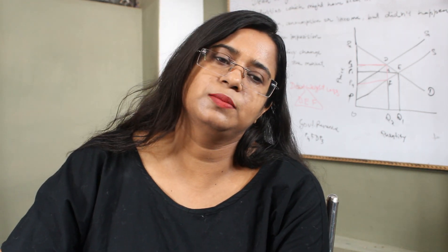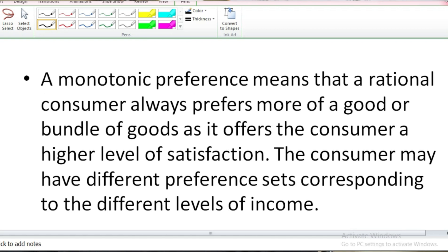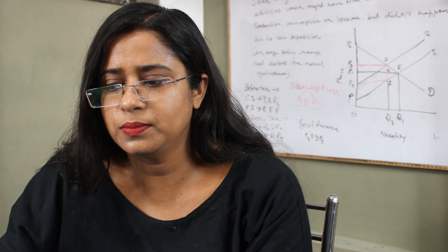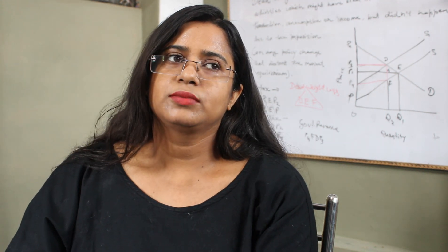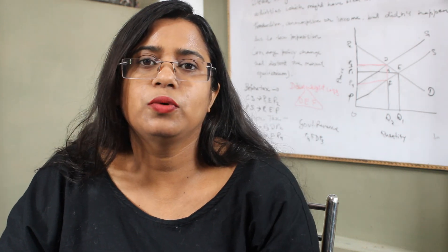As you can see on the screen, a monotonic preference means that a rational consumer always prefers more of a good or bundle of goods, as it offers the consumer a higher level of satisfaction. The consumer may have different preference sets corresponding to different levels of income, because making a demand is relevant to your income or budget level — it imposes a certain constraint. But within your budget, you will opt for the highest number of the commodity.